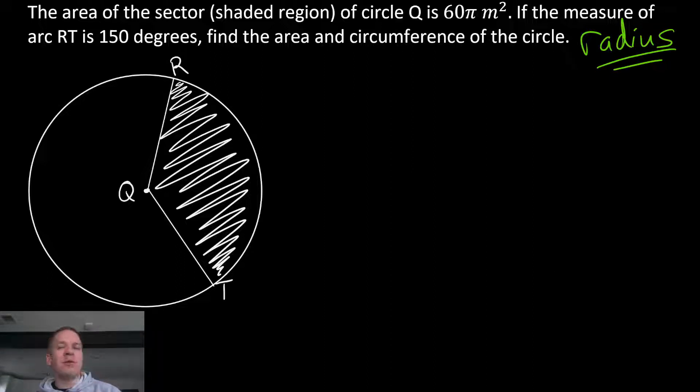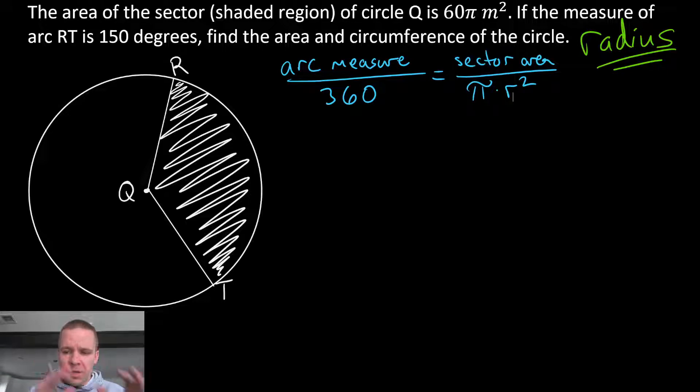But I do know the area of the sector and I do know the arc measure. Perhaps I can jot down my universal proportion that I can set up to solve for some missing things. So there's my proportion. Let's plug in what we know.